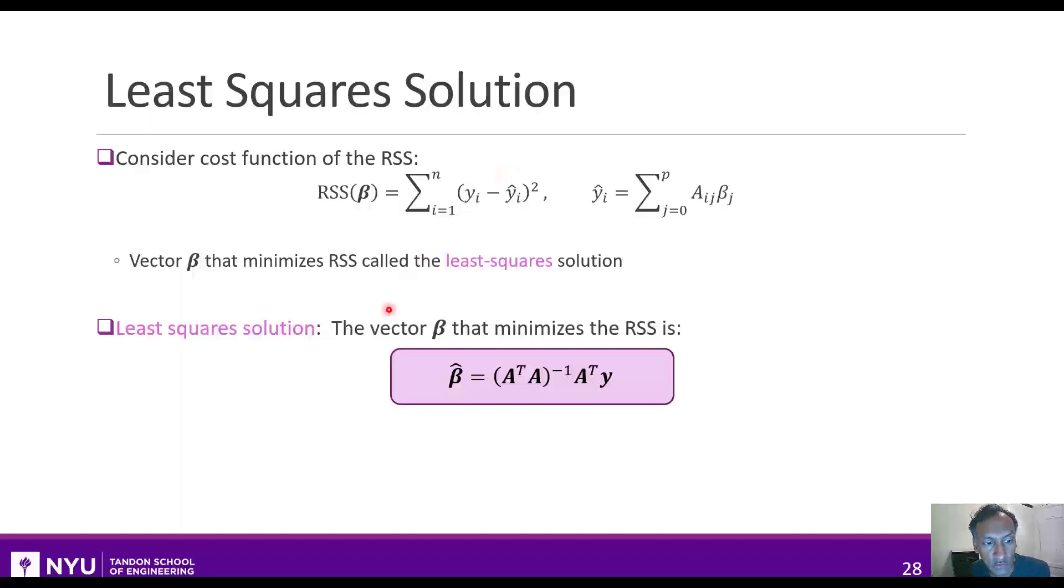Turns out that this least square solution has a simple form. The one that minimizes it, which we'll call beta hat, is just given by this algebraic expression here. Just to note, these are matrix quantities. A transpose y is a p-dimensional vector, and A transpose A will be a p by p matrix. So this is a matrix inverse, a p by p matrix inverse, and this is a p-dimensional vector. And then when you multiply these through, you get a p-dimensional output.